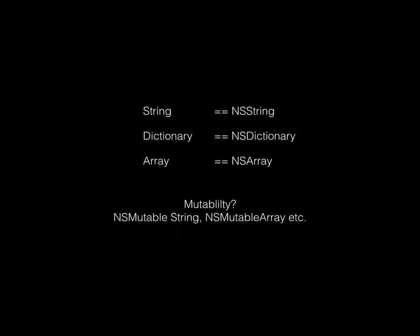In terms of mutability, Swift has a really unique approach. If you make a variable a constant it's immutable, but if you declare it as a variable it is immutable until you change it. Without second-guessing whether you need a mutable array or mutable string, if you run any method that mutates it, the Swift compiler will pick that up and automatically declare the object as mutable. This makes it more efficient — you don't have to manually do that.